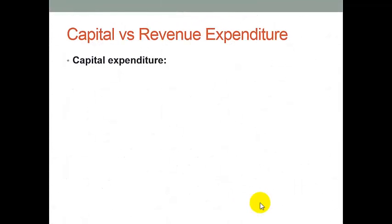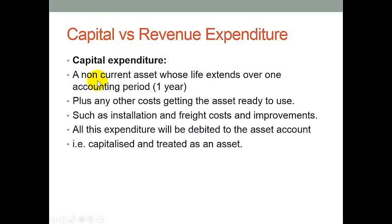Another concept is how much we record when we actually buy our asset in the first place. There are two concepts here. The first one is capital expenditure. This covers buying a non-current asset whose life extends over one accounting period — commonly anywhere between two to ten years — plus any other costs involved in getting the asset ready to use, such as installation, freight costs, and improvements. All those capital expenditure items will be debited to the asset account, meaning they are capitalised and treated as an asset.